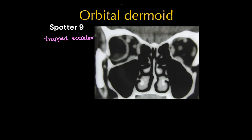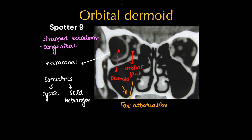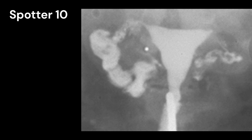This is a case of orbital dermoid. This can show cystic or solid changes with heterogeneous attenuation.